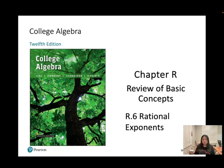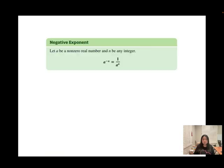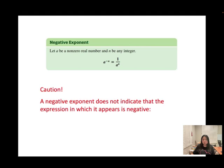R6: Rational exponents and negative exponents. We let a be a non-zero real number, and n will be any integer. A is the base and negative n will be the exponent. When you have a negative exponent, you can rewrite it as 1 over a to the power of n. The negative exponent does not indicate that the expression in which it appears is negative.